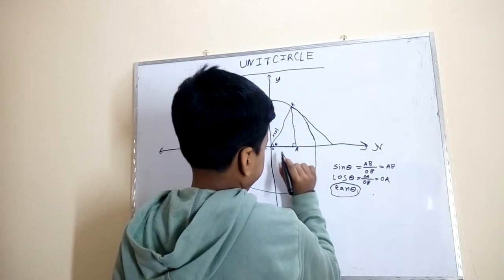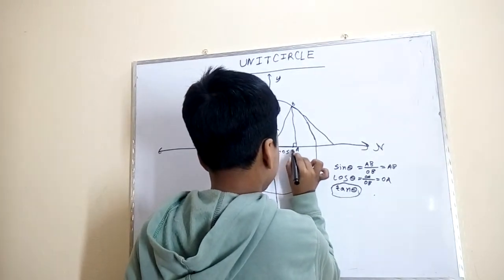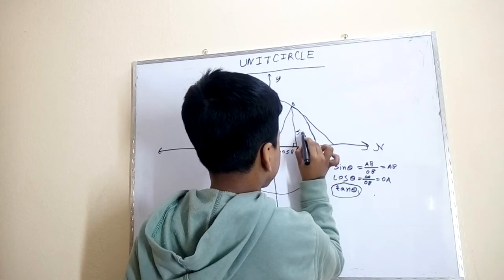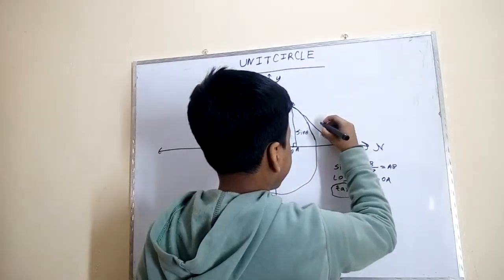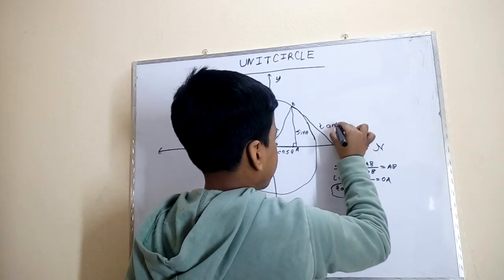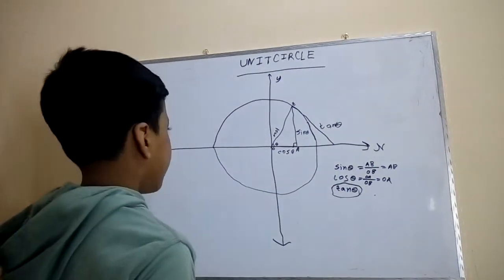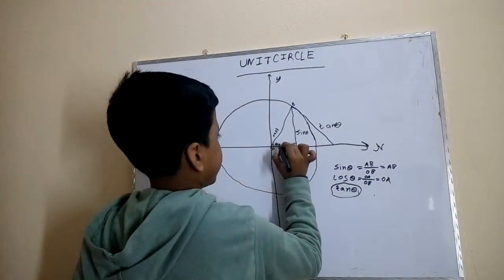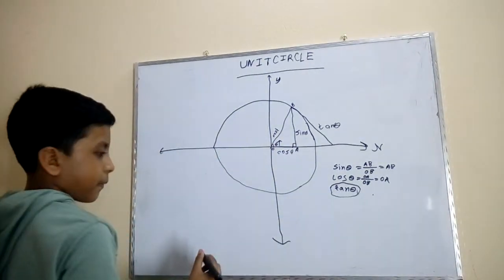So OA is cosine, so we write cos theta right here. And this side is sine theta. And this is tan theta. Now let's increase theta — what happens if we increase theta?